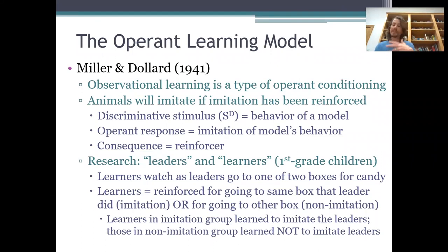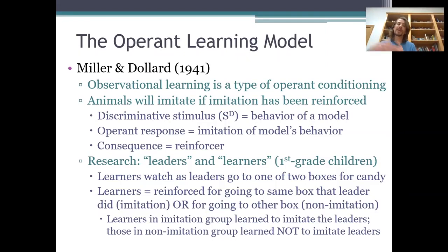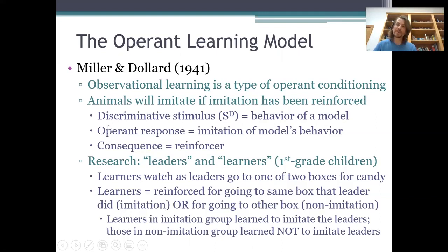Seeing the leader behave in a certain way was a stimulus that allowed the learner to discriminate between behaviors likely to get reinforced and behaviors that weren't. If a kid got reinforced for doing the same thing as the leader, they tended to acquire imitation as an operant response. If a kid got reinforced for doing the opposite, they tended to acquire non-imitation as an operant response. So this is a very behaviorist, very Skinnerian view of observational learning — Miller and Dollard explain it with the same three-term A-B-C contingency used to explain any case of operant conditioning.